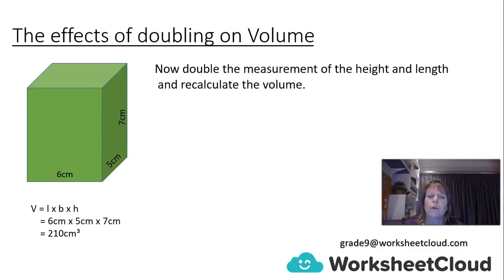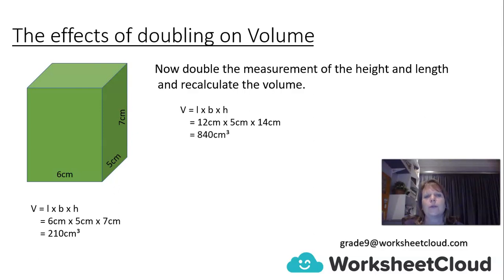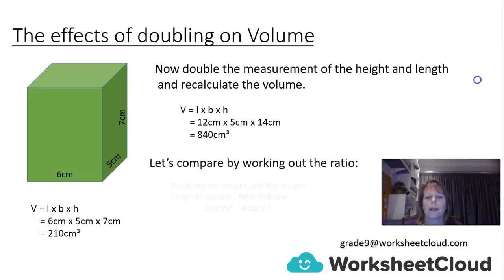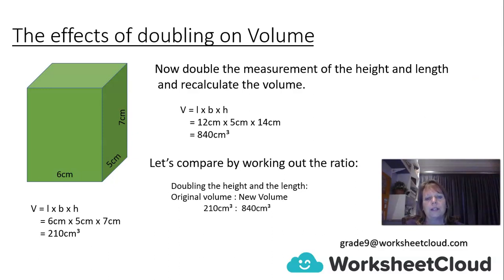Let's check if it works for doubling the height and the length. The height is 7, doubled to 14, and the length 6 is doubled to 12. So it's 12 times 5 times 14, which gives us 840 cm cubed — the same as before. The ratio is 210 cm cubed to 840 cm cubed, which is 1 to 4. The volume is 4 times bigger when you double two sides.